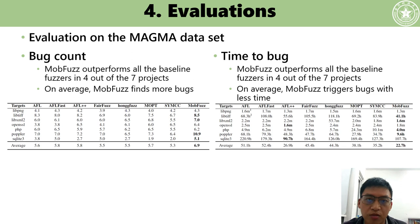The second part of the evaluation uses the MAGMA dataset, with results on bug count and time-to-bug. In bug count, MOB-Fuzz outperforms all baseline fuzzers in 4 out of 7 projects, and on average finds more bugs than the baselines. In time-to-bug, MOB-Fuzz outperforms all baselines in 4 out of 7 projects, and on average triggers bugs in less time.